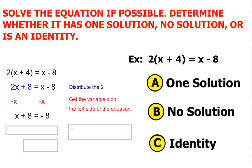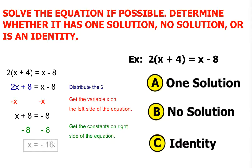Almost done. Need a hint? Get the constants on the right side of the equation. And in order to accomplish that we would have to subtract 8. So our value of x is negative 16.